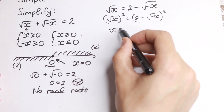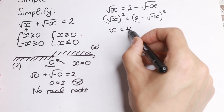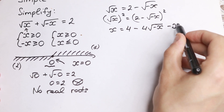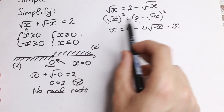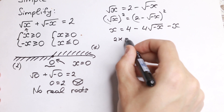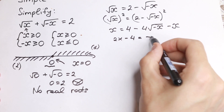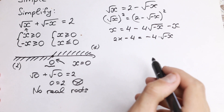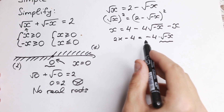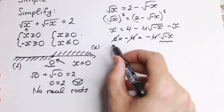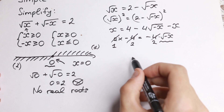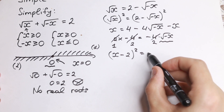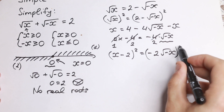Expanding using the (a − b)² formula: x = 4 − 4√(−x) + (−x), which simplifies to x = 4 − 4√(−x) − x. Collecting x terms: 2x − 4 = −4√(−x). We raise both sides to the second power again to eliminate the remaining square root, giving (x − 2)² = (−2√(−x))².